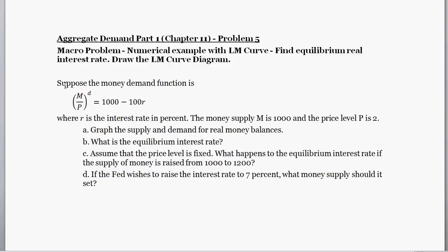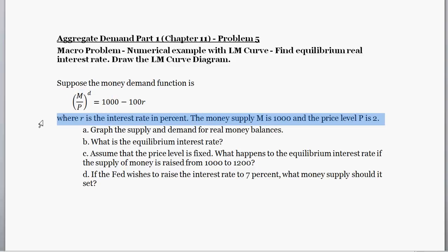Suppose that we have a money demand equation: M over P equals 1,000 minus 100R. The D superscript is just a notational indication that it's money demand — it's not an exponent. So money demand equals 1,000 minus 100R, where R is the interest rate in percent, the money supply M is 1,000, and the price level P is 2.